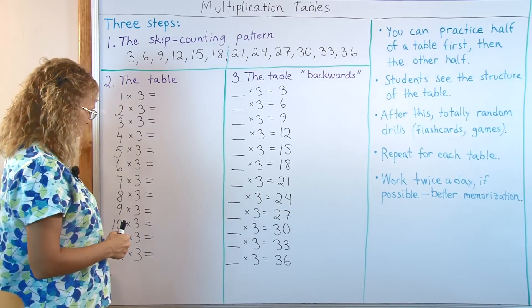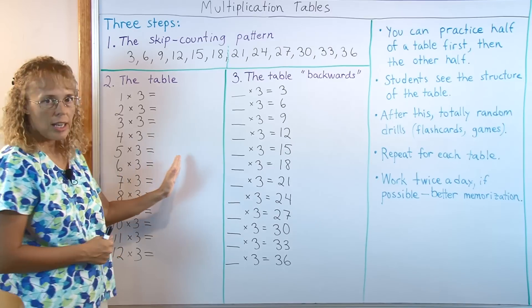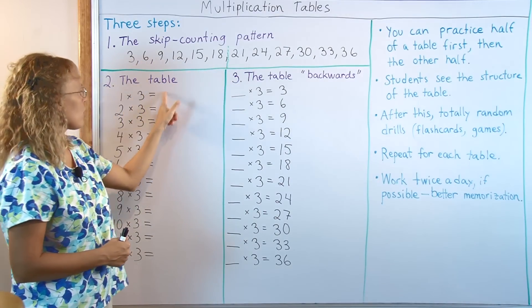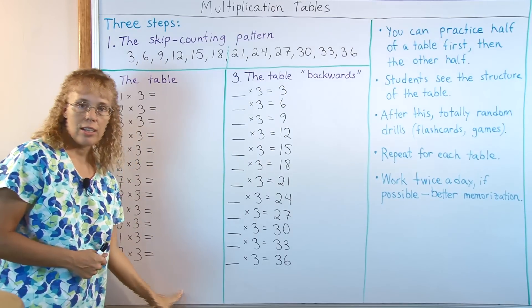So when it is written like this then you go through, make sure that the students understand that each one of these skip counting list numbers goes here. So there's 3, 6, 9, 12, etc. They go here.